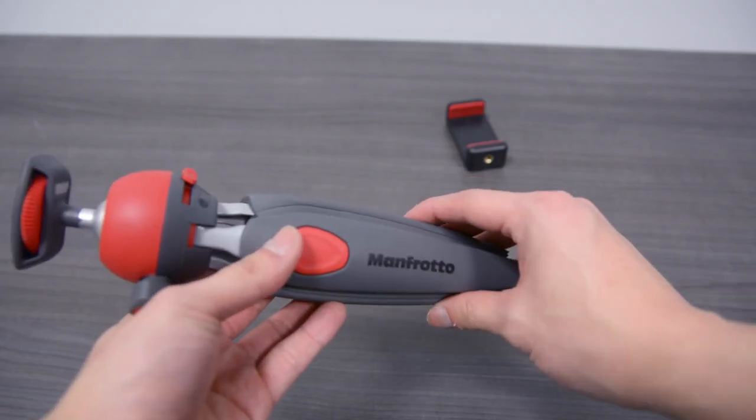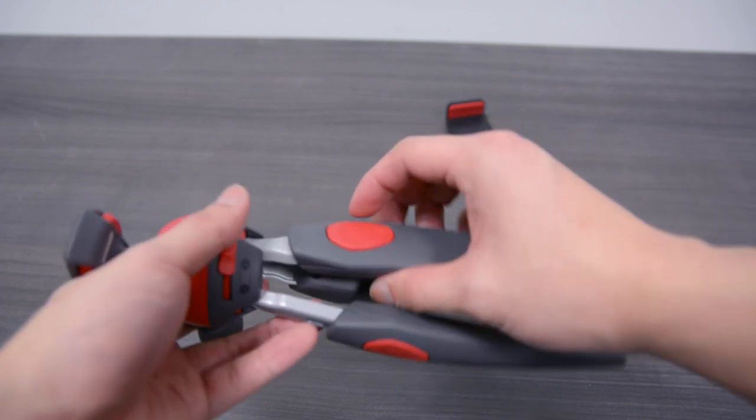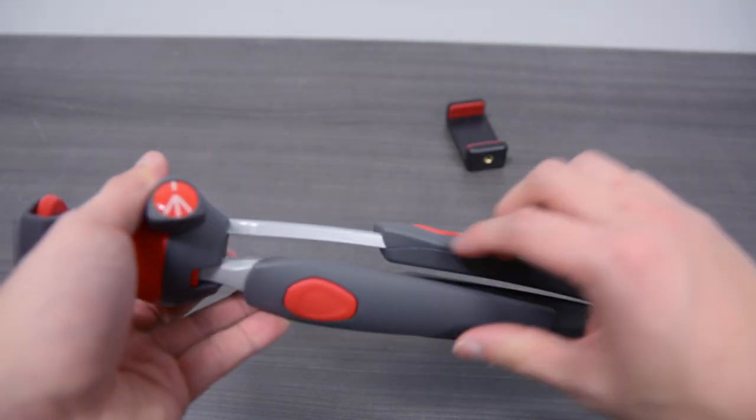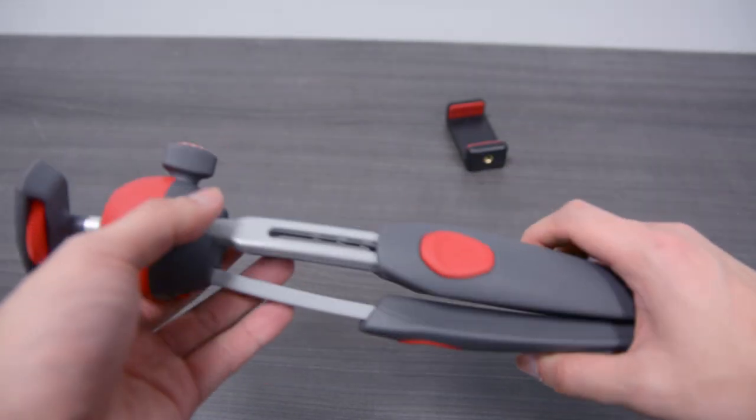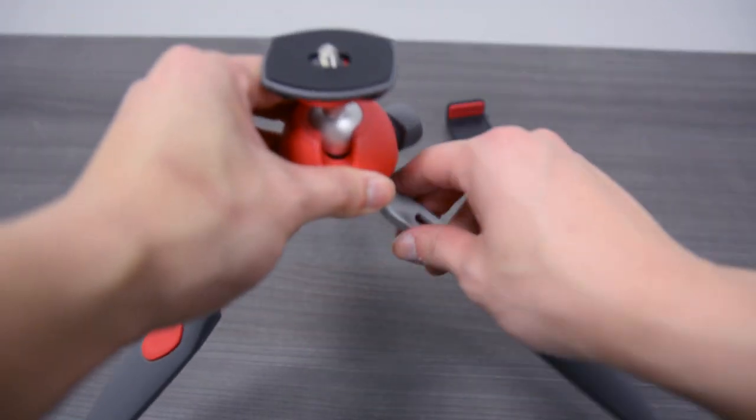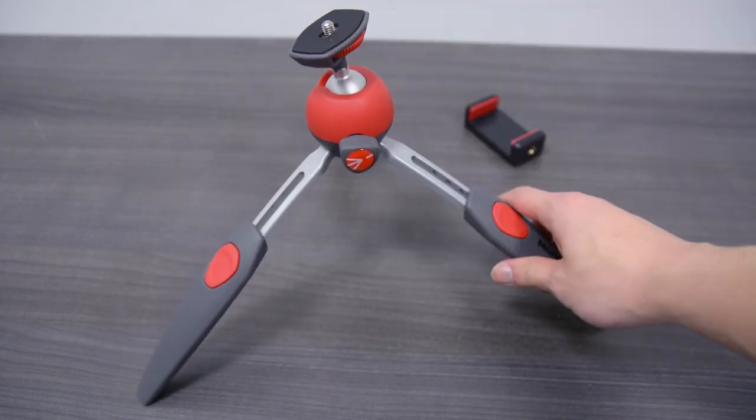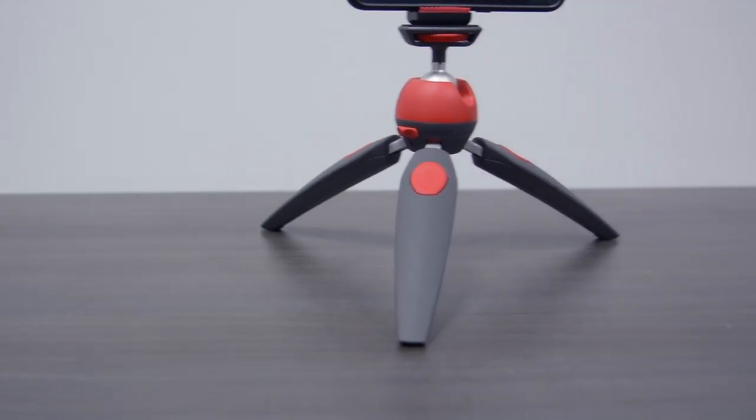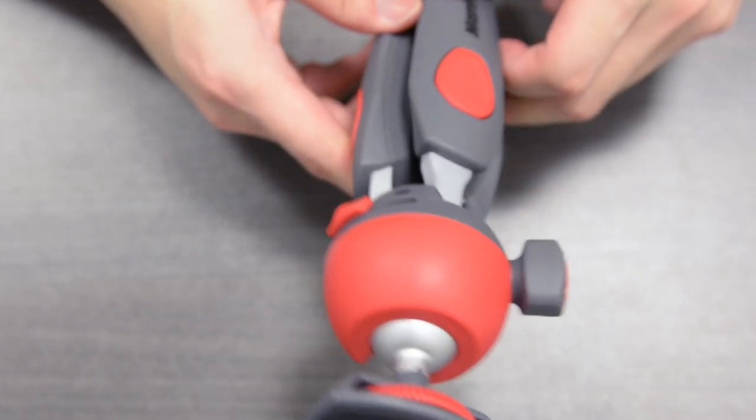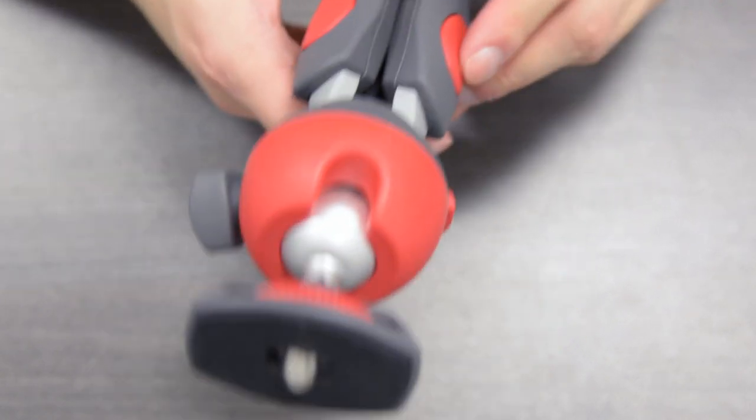So I decided to buy the Manfrotto Pixi Evo 2 because it's the Pixi Evo 2. What's the difference between the Manfrotto Pixi and the Pixi Evo? It's the ability to hold much more weight. Initially, the Manfrotto Pixi was able to hold things like your smartphone or a compact camera like a Canon G7X and only held up to 2.5 pounds or around one kilogram. Well, this here can hold up to 5.5 pounds or two kilograms, perfect for your entry-level DSLRs and compact cameras with a heavier lens.